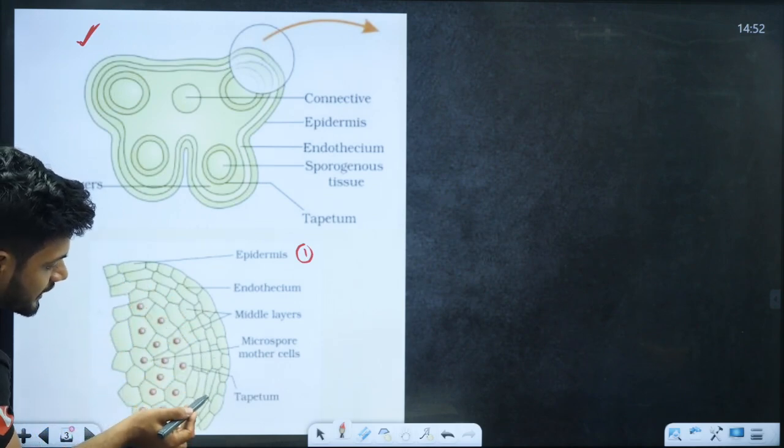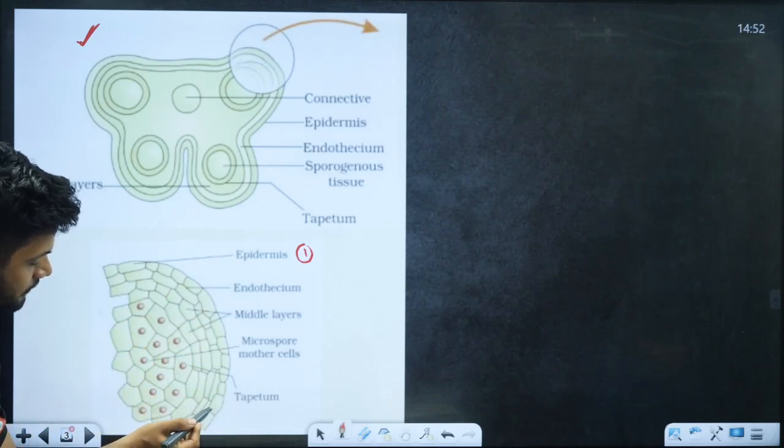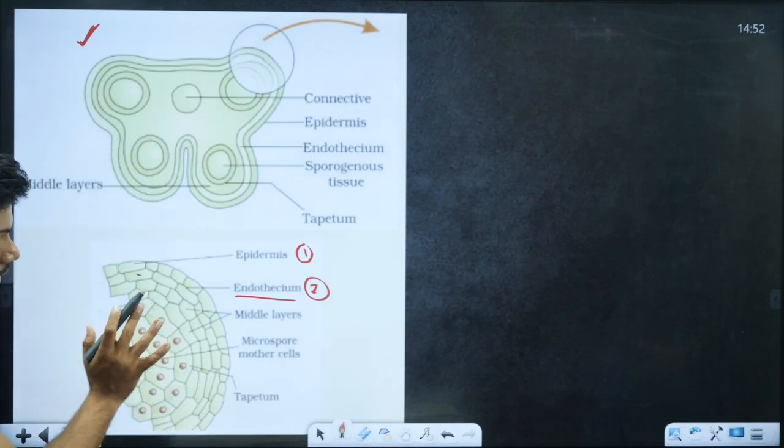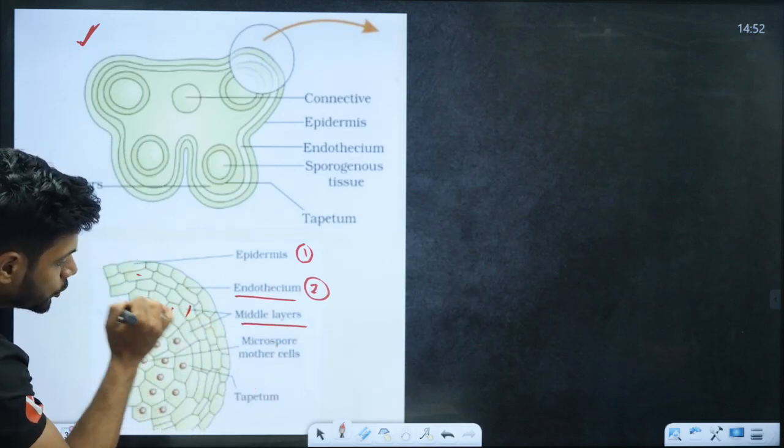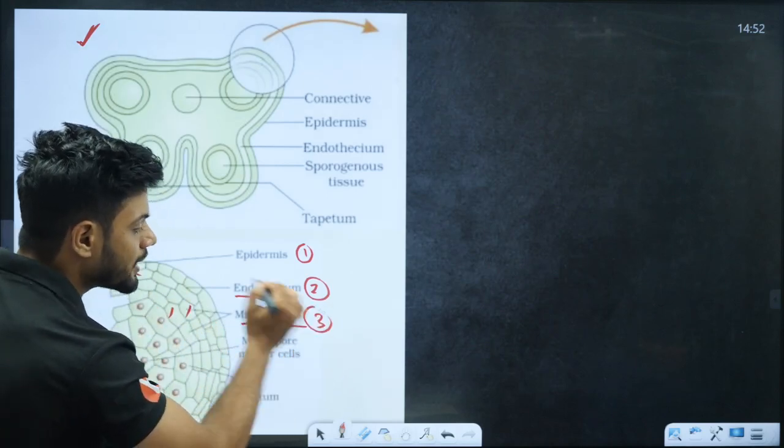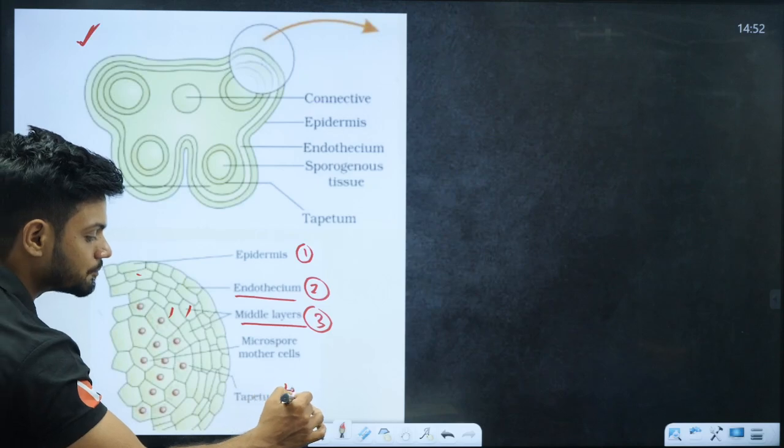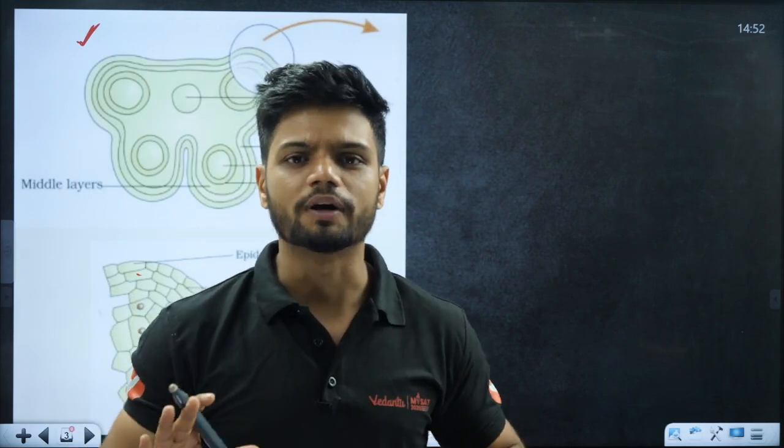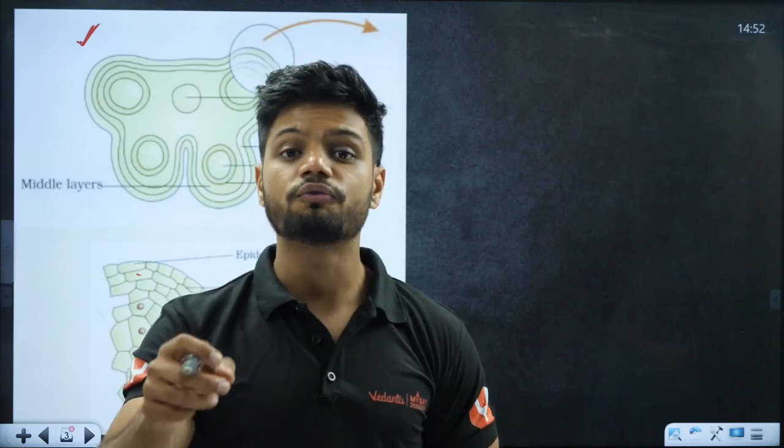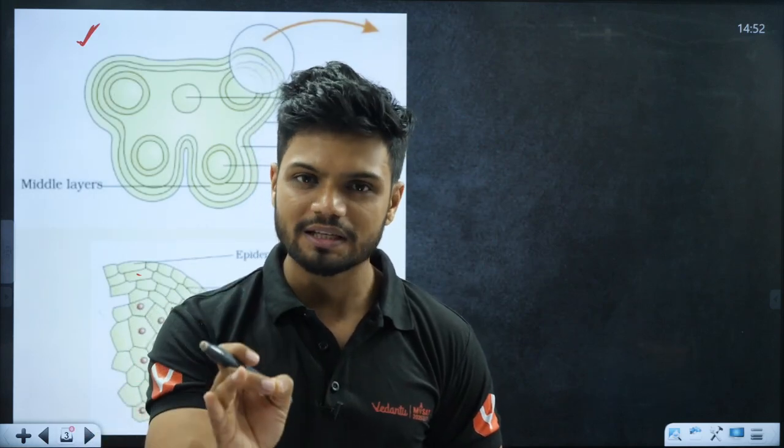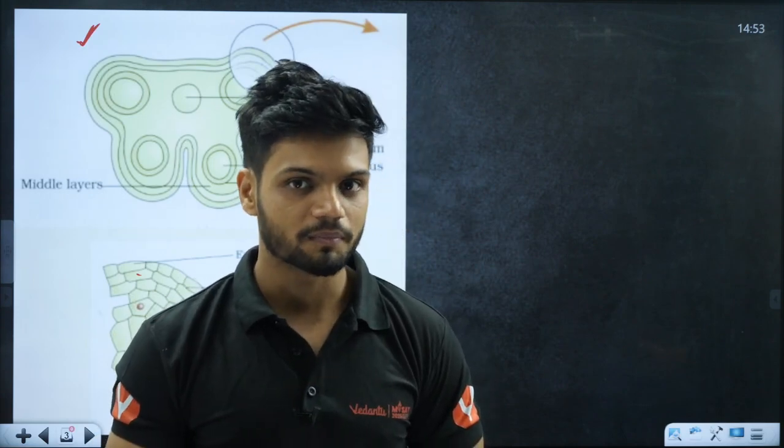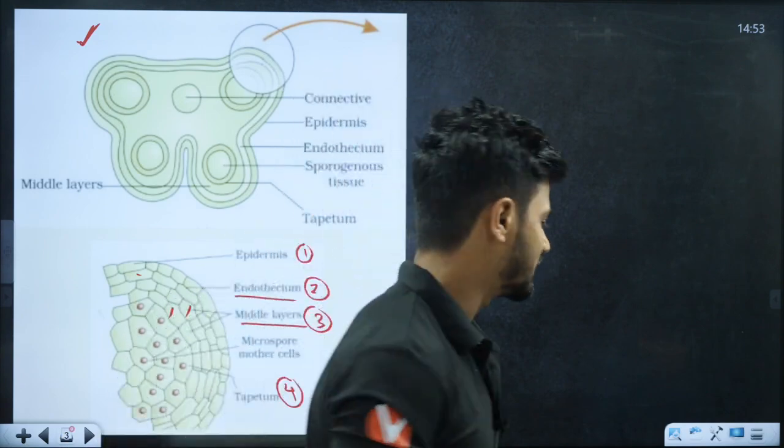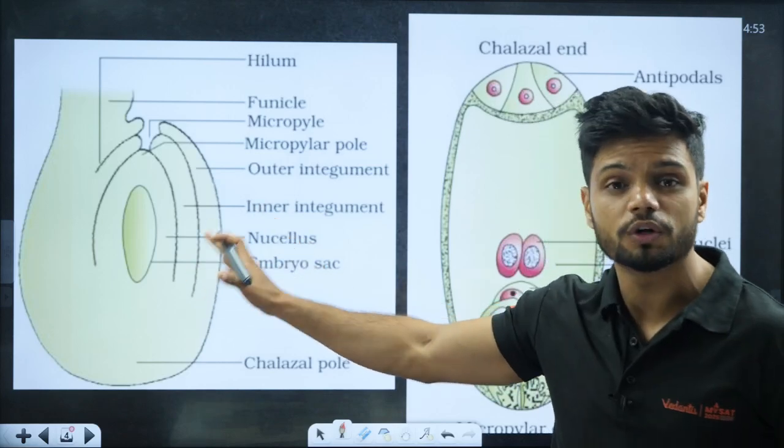The outermost layer is called epidermis. Epidermis is always a single layer. Then there is middle layer which can be one, two or three layers. The innermost layer is called tapetum. These are the four layers of microspore angia given in your NCERT. They can also ask you the functions - the tapetum's main function is nourishment to the developing pollen grains.